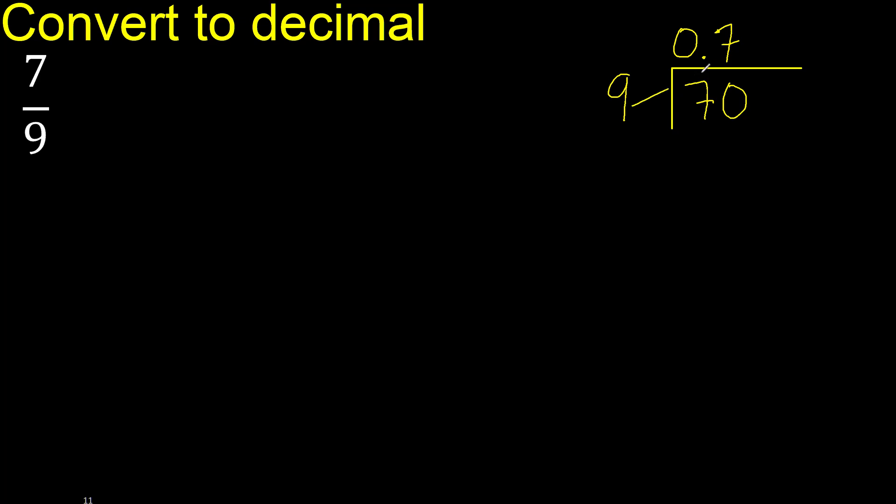Multiply by 7. 63, ok, is not greater. Perfect. Subtract: 70 minus 63 is 7. Next.